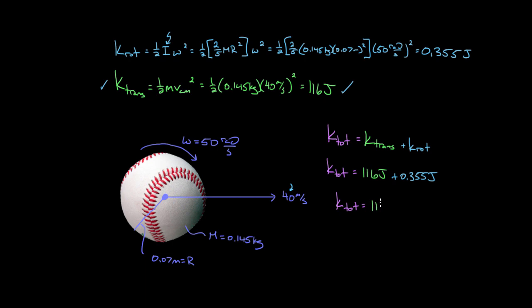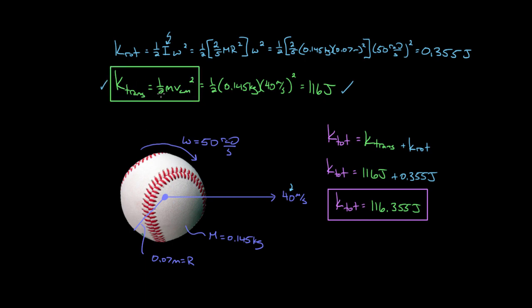To recap: if an object is both rotating and translating, find the translational kinetic energy using one-half m times the speed of the center of mass squared. Find the rotational kinetic energy using one-half I omega squared - where I is the moment of inertia for the shape (mr squared for a point mass, two-fifths mr squared for a sphere, one-half mr squared for a cylinder; look these up in tables) - times the angular speed squared about the center of mass. Add both terms to get the total kinetic energy.